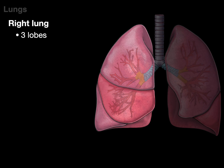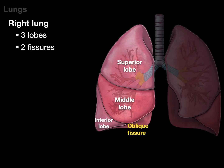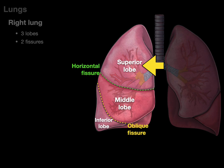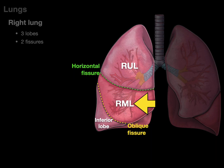The right lung has three lobes: superior, middle, and inferior, separated by two fissures. The oblique fissure separates the middle and inferior lobes, and the horizontal fissure separates the superior and middle lobes. The superior lobe is also called the right upper lobe, the middle lobe is the right middle lobe, and the inferior lobe is the right lower lobe.